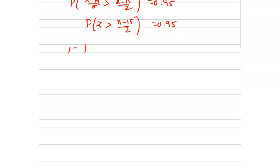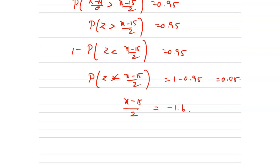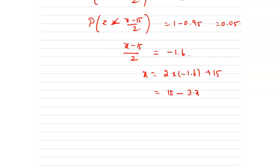Hence 1 minus p of z less than (x minus 15) divided by 2 equals 0.95. So p of z less than (x minus 15) divided by 2 equals 1 minus 0.95, which is 0.05. From the z table, (x minus 15) divided by 2 equals negative 1.6. So x equals 15 plus 2 times negative 1.6.